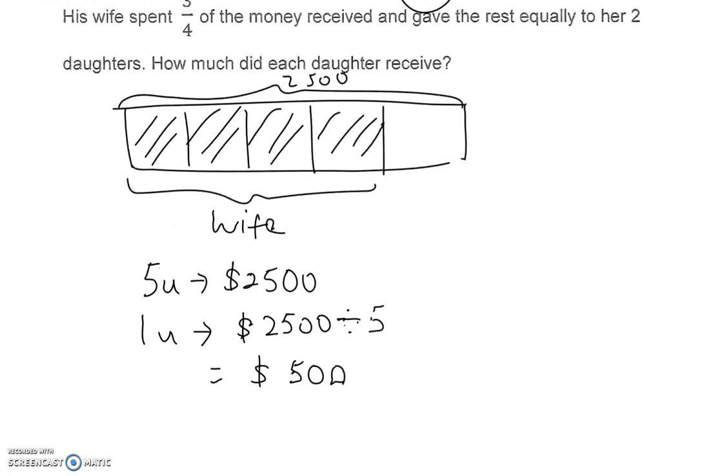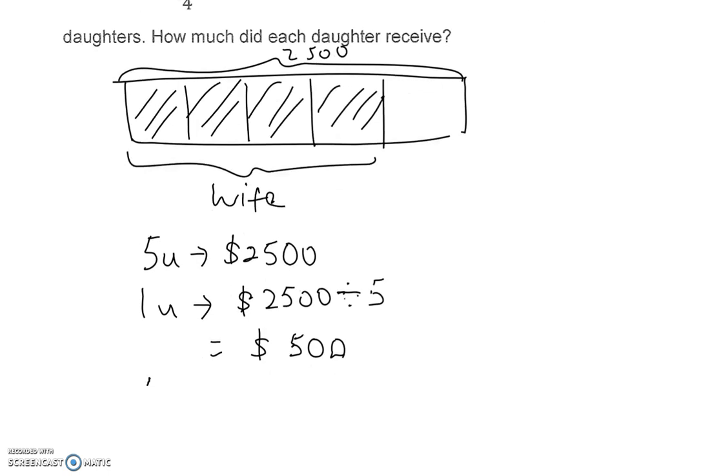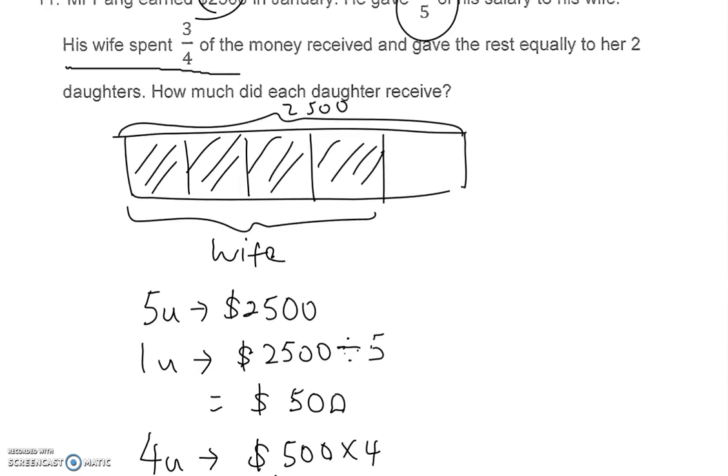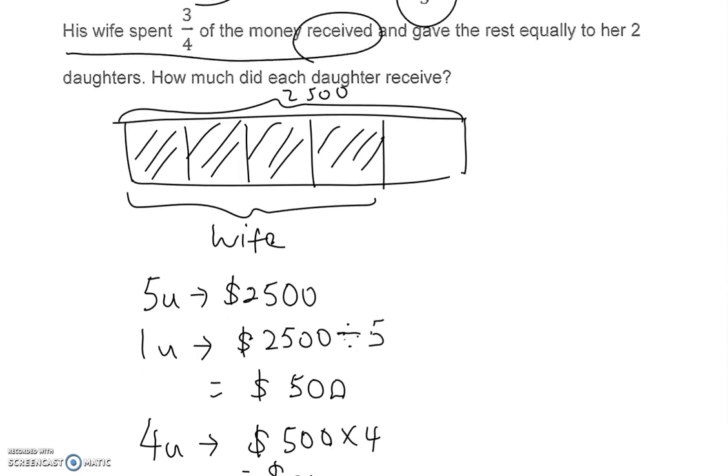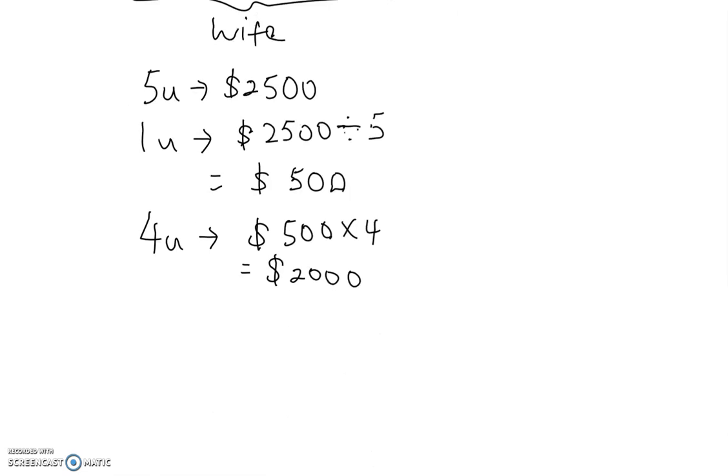Okay, now let's see how much was given to the wife. 4 units, which is 500 times 4. So $2,000 was given to the wife. Now the next sentence says the wife spent 3 quarter of the money being received. So the wife received 4 units. Okay, the wife received the 4 units. And this 4 units is $2,000, which we found out earlier.